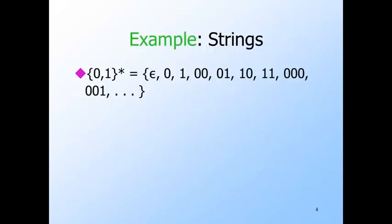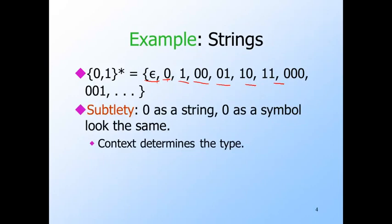The language {0,1}* consists of all strings that can be made from the symbols 0 and 1: epsilon (the empty string), the two strings of length one (0 and 1), four strings of length two, and so on. We do not make a distinction between a symbol like 0 and the string of length 1 consisting of a single instance of that symbol — we trust that context will make clear which we mean. Programming languages do make this distinction: in C, single quotes around 0 mean the character, and double quotes mean the string consisting of only 0.